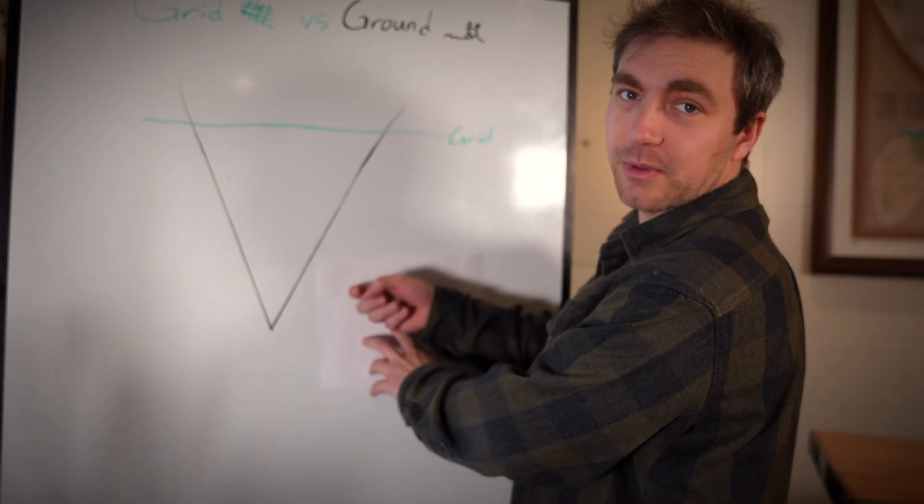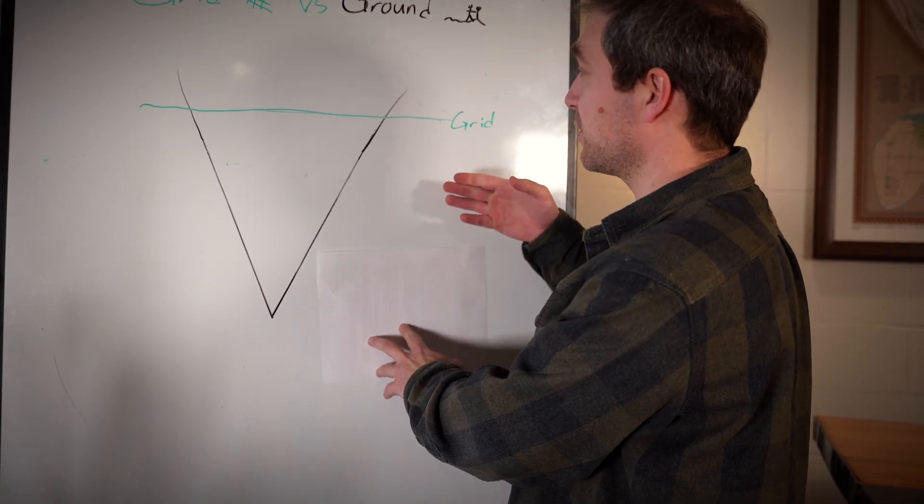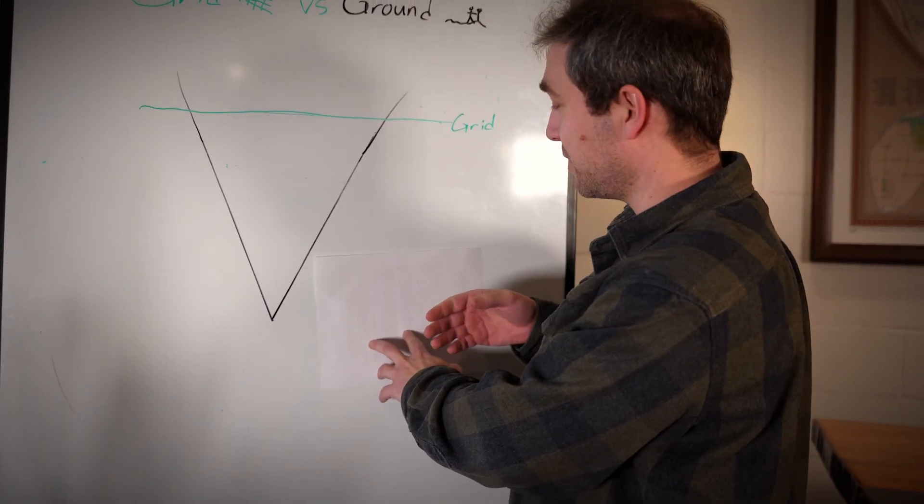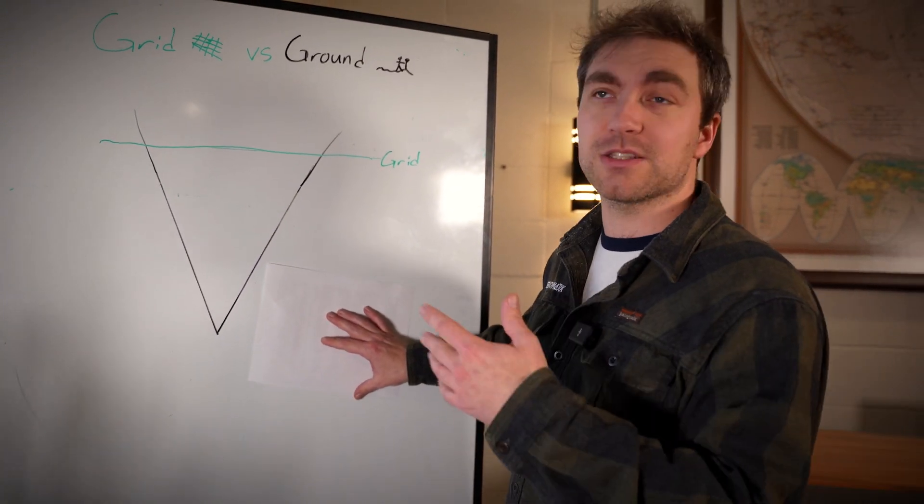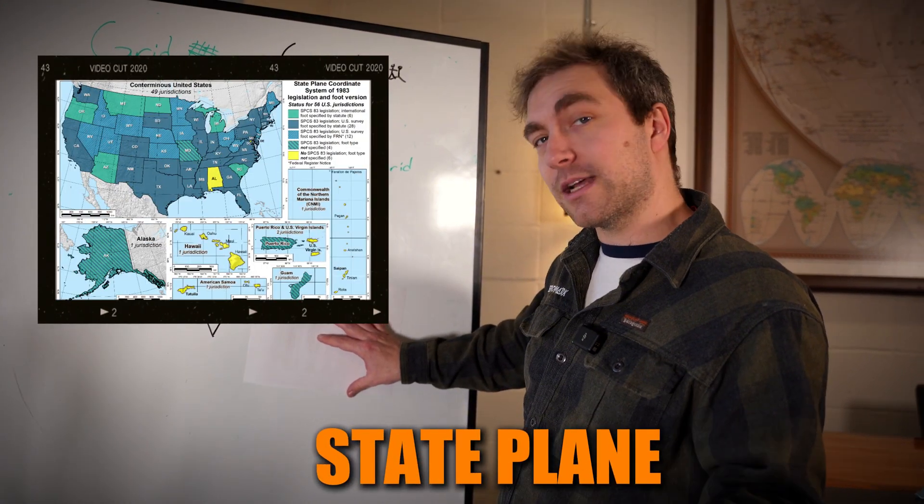Your position on here would be your grid position. It's just a projection of your latitude and longitude from the GPS onto whatever mapping plane you are using, whether that's UTM or state plane.